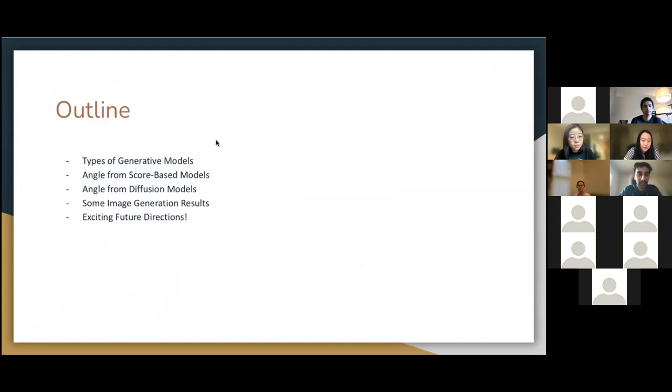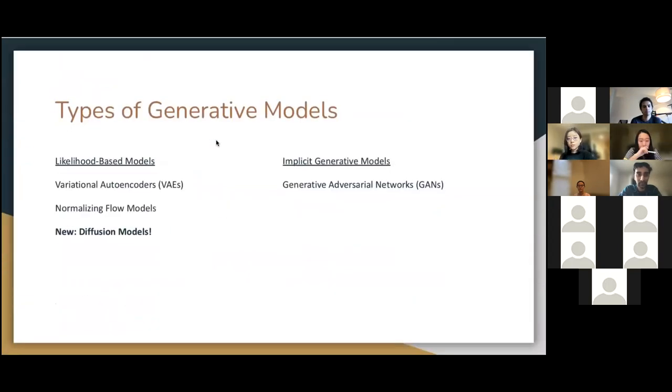Okay, let's get started. So I'm going to go over these things today. And first, let's talk about the types of generative models. They can be split into likelihood-based models and implicit generative models. You've likely seen VAEs and GANs before, but there's a new type of model called diffusion models under the likelihood-based category that has been making a lot of improvements and beating GANs lately.